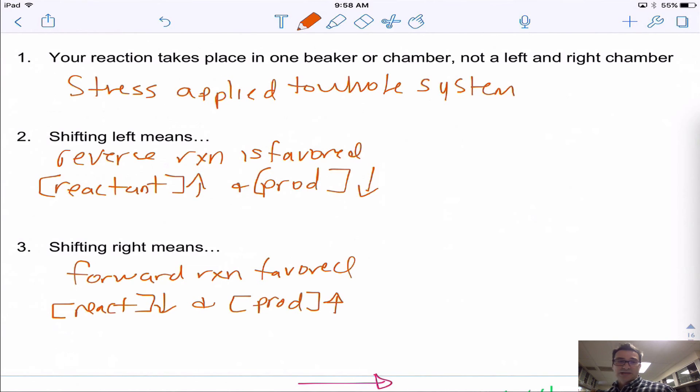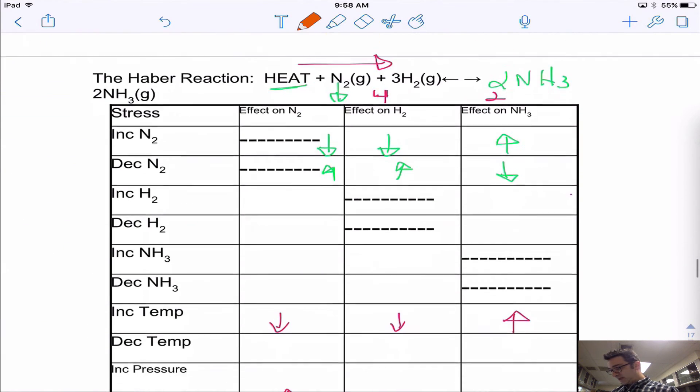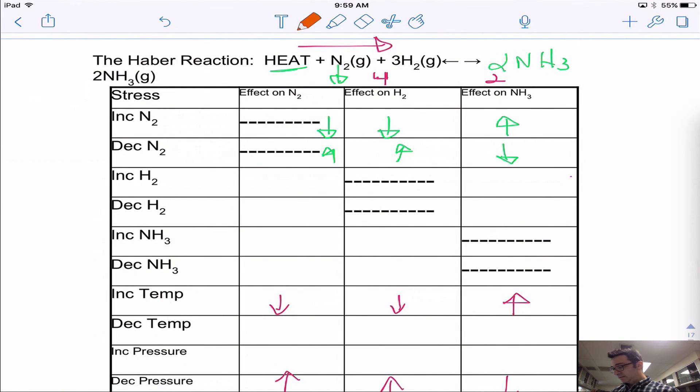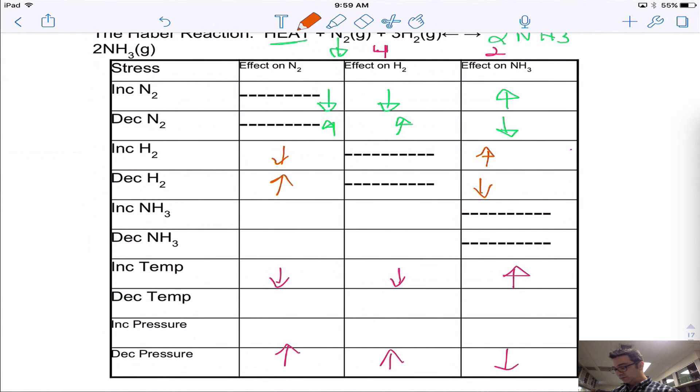Okay, so now I gave you this practice to do and I did some of it for you. Just to fill out the rest of it, which we'll do in class before you actually see this video, but just to go through the rest of it in case you were confused in class. If I increase H2, that means that's a reactant, so the N2 will go down and the NH3 will go up. It will shift to the right. If I decrease H2, the opposite happens: N2 increases, NH3 decreases.